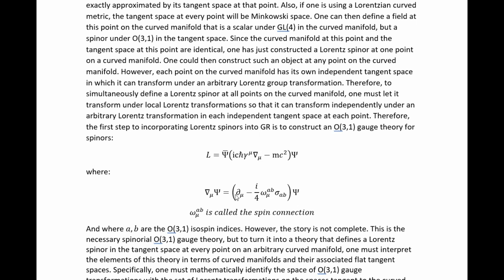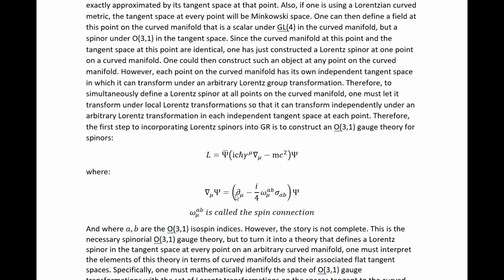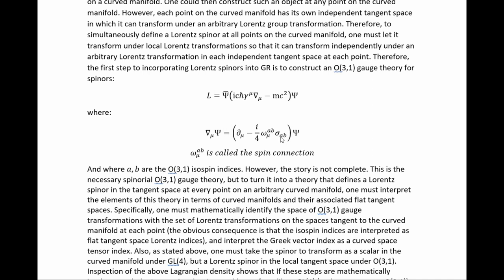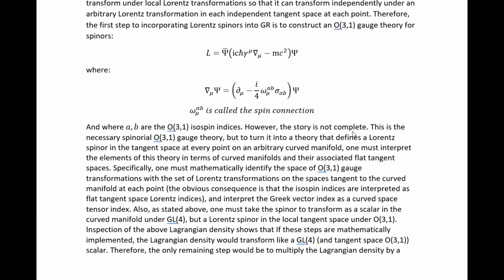Therefore, the first step to incorporating Lorentz spinors into GR is to construct an O(3,1) gauge theory for spinors, where spinors transform under the Lorentz group via the usual transformation, except the parameters are now allowed to vary with space and time. We have a Lagrangian with a gauge covariant derivative, a gauge field, and generators — specifically, these matrices times a factor of one-half, where A and B are the O(3,1) isospin indices. However, the story is not complete.